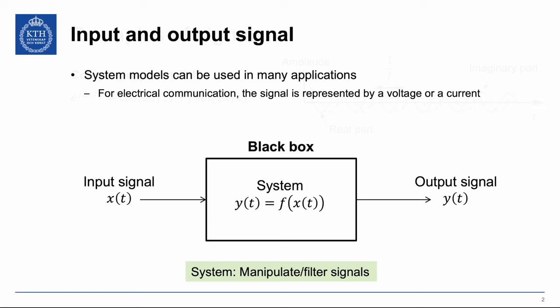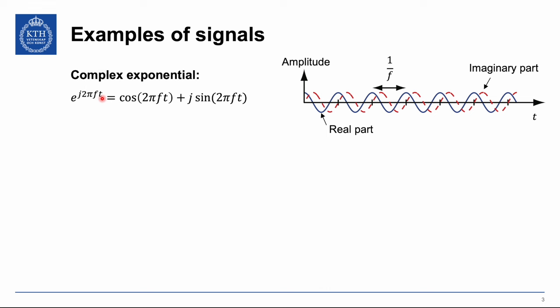One basic thing is a complex exponential. This is a function which contains a cosine and a sine with a particular frequency f. So it's cosine of 2 pi f t where t is the time. In the real part we have that and in the imaginary part we have the sine of the same frequency. The signal over time looks something like this — in the real part we have the cosine, in the imaginary part we have the red sine signal. The distance in time between two peak values on the cosine or sine is 1 over the frequency. We can use the amplitude and phase of it to convey information.